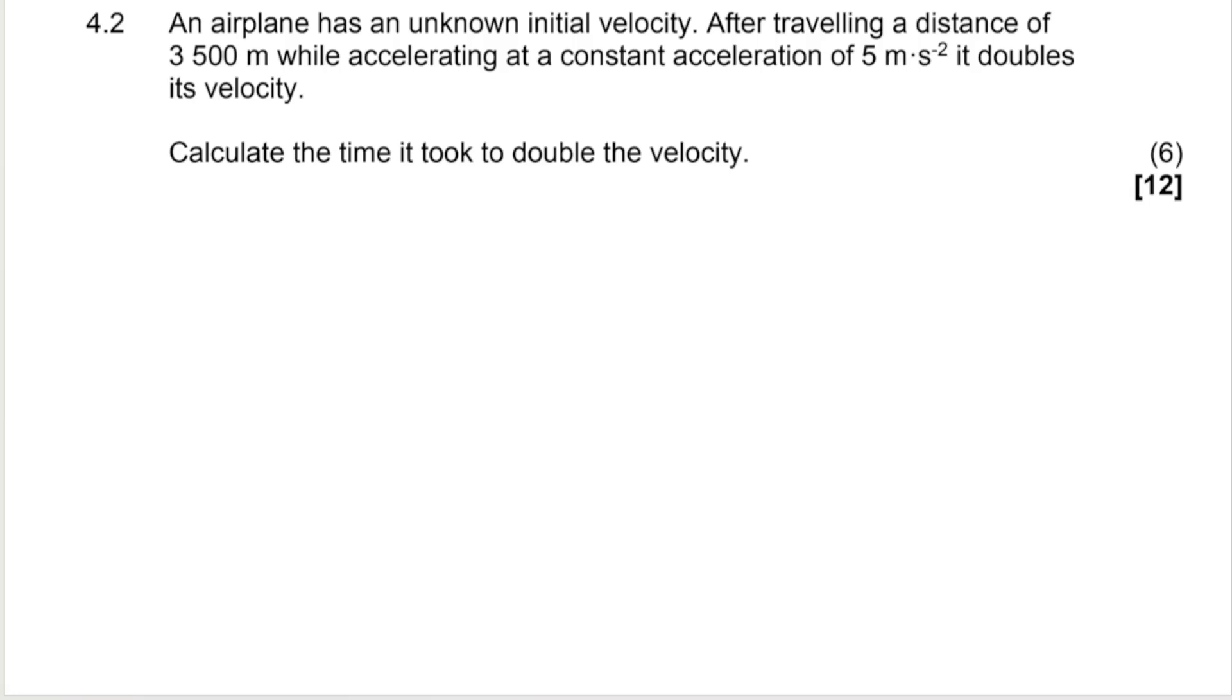Now the difficult question. Six marks. An airplane has an unknown initial velocity. So I'm going to just list over here, VI? I don't know what it is. After traveling a distance of 3,500 meters, so my displacement, my distance is 3,500 meters, while accelerating at a constant acceleration of 5 meters per second squared. Remember, every time you see the negative 2, you know that that is acceleration, not velocity. Velocity doesn't have a negative 2, it has a negative 1. So while accelerating at that constant acceleration, it doubles its velocity. Important. Interesting. Calculate the time it took to double the velocity. So we're looking for time.